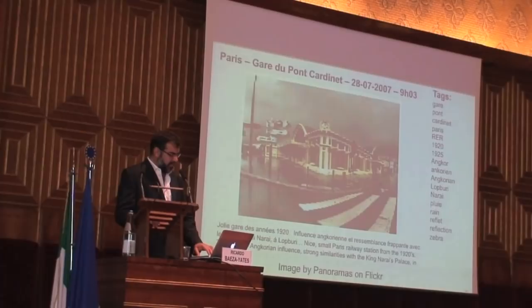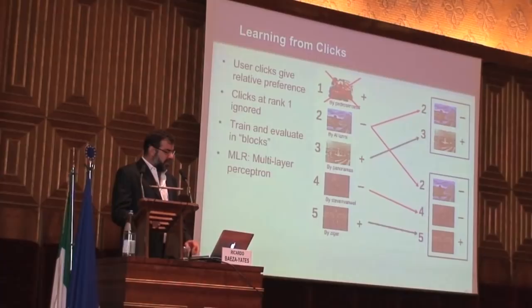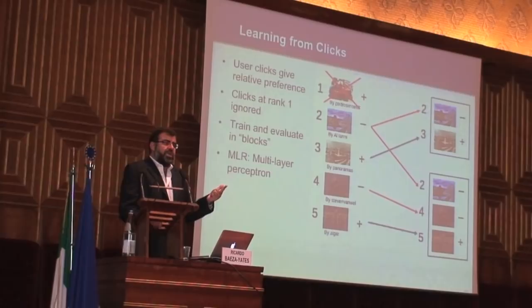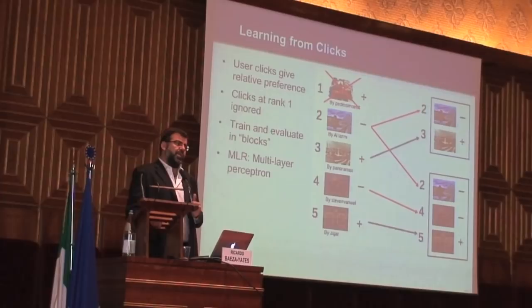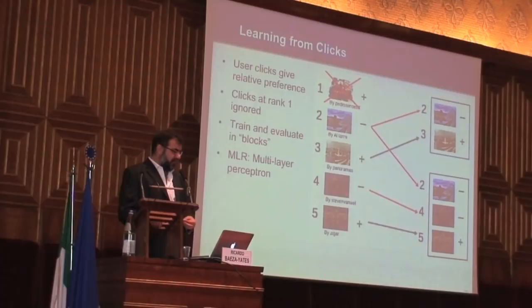Basically you get something like this — you have the image, you have the tags, you have all the other metadata. Now you have to learn from clicks. Clicks at rank one were ignored. There's one problem with clicks: you have to be very careful if the clicks are biased by the user interface and by the ranking. People will click more on the first image only because it's in the first place, and they will click more on the first page of results because going to the second page requires more effort.